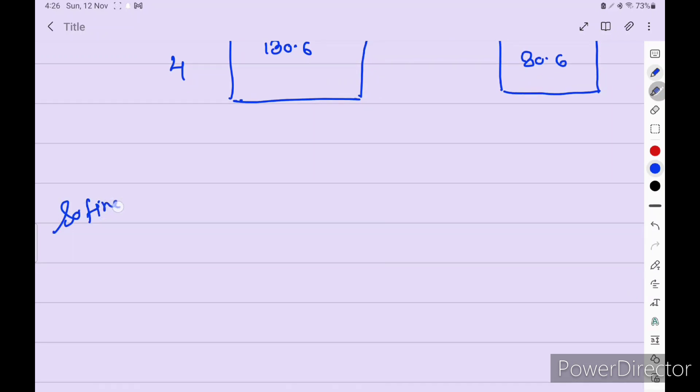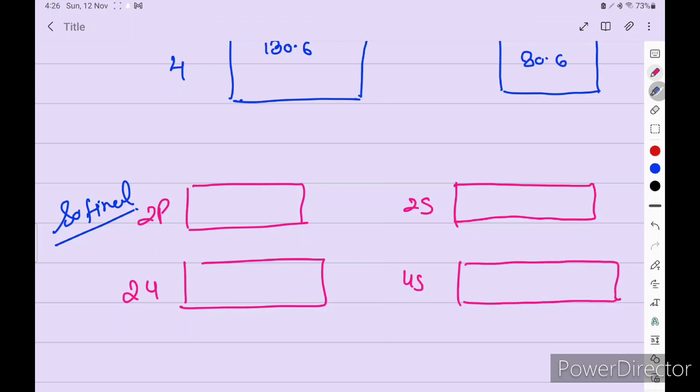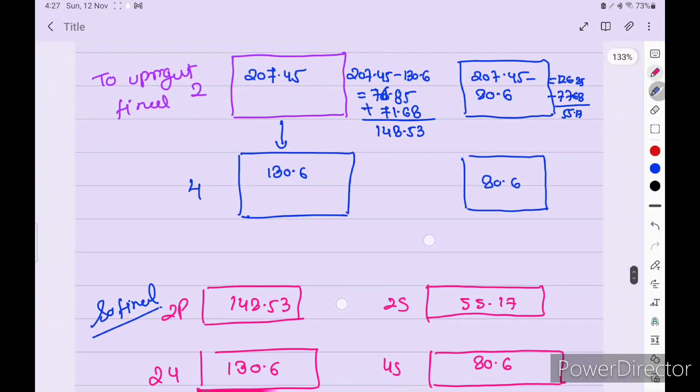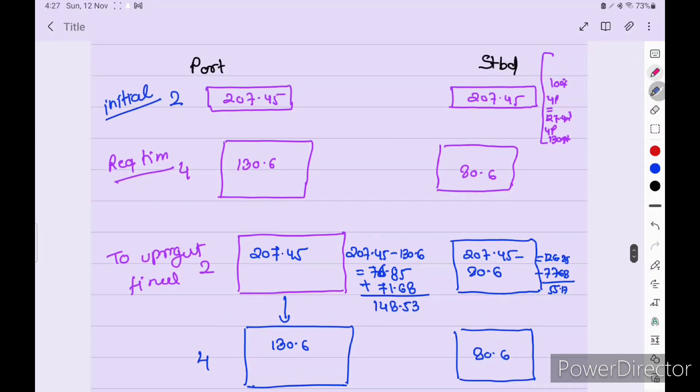So final: 2 port, 4 port, 2 starboard, 4 starboard. Here 148.53, 130.6, 55.17, and 80.6.